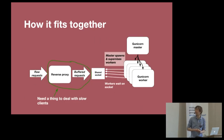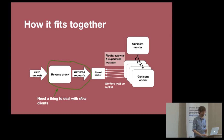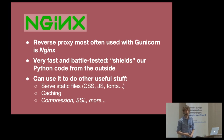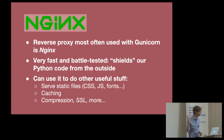Gunicorn workers wait on a shared socket, but they expect requests to come in quickly, so we need a reverse proxy in front of Gunicorn to deal with slow clients and buffer the requests. The most common software used as a reverse proxy for this kind of application is NGINX - a very fast, battle-tested web server. On top of that, we can use it to do other useful things like serve the static files for a Django application, do some basic caching, compression, HTTPS, et cetera.